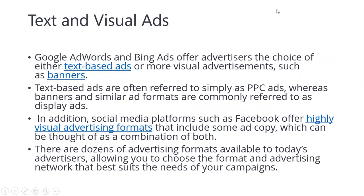Not every online advertising campaign will have every element, but the following components will be common to many. Text and visual ads are standard — Google AdWords and Bing Ads offer advertisers the choice of either text-based ads or more visual formats such as banners. Text-based ads are often called PPC ads, while banner and similar formats are called display ads. Social media platforms such as Facebook offer highly visual advertising formats combining text, banners, and PPC, along with ad copy that blends both.